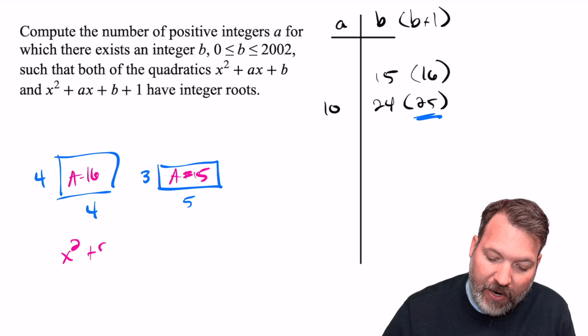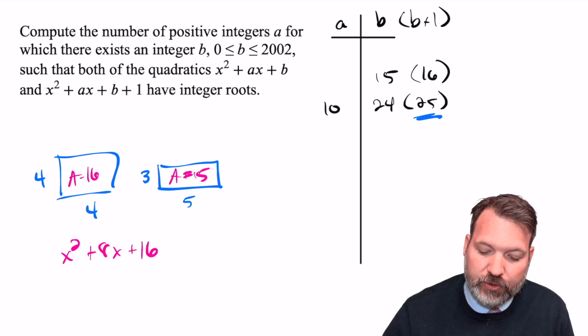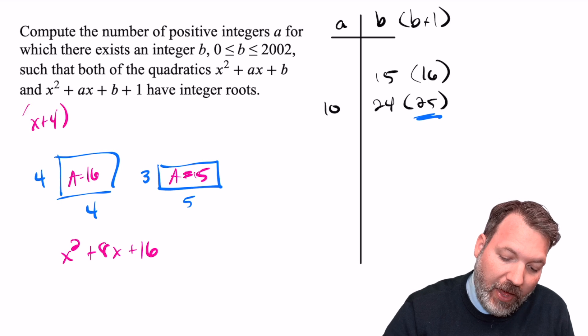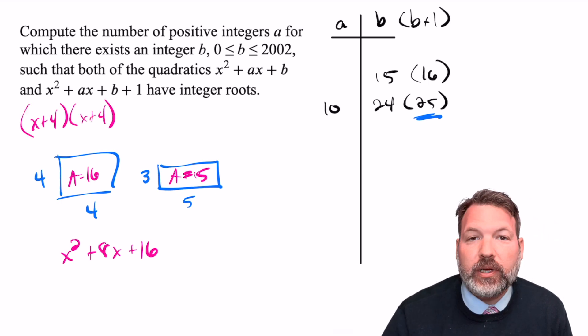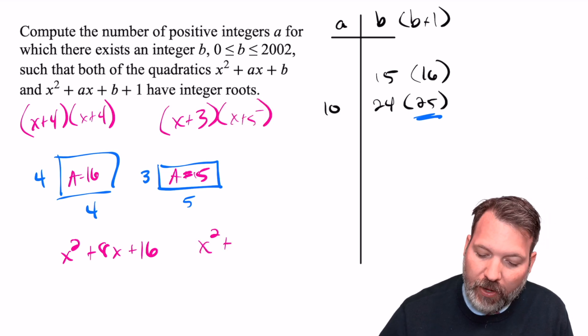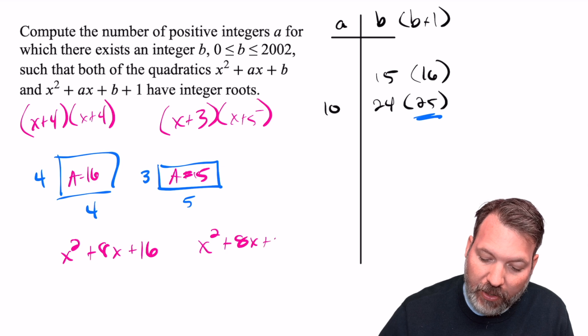If we were to state these as trinomials, we would get the perfect square trinomial x² + 8x + 16 coming from (x + 4) times (x + 4). And then the other one (x + 3) times (x + 5) would give us the trinomial x² + 8x + 15.